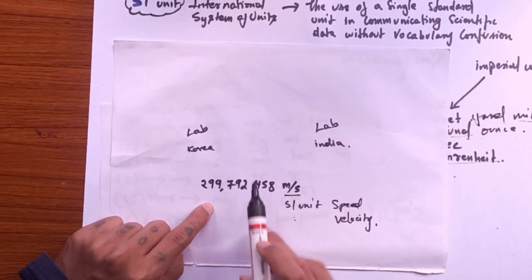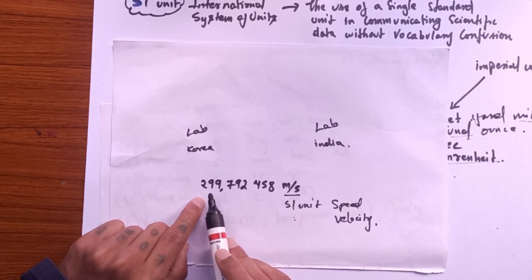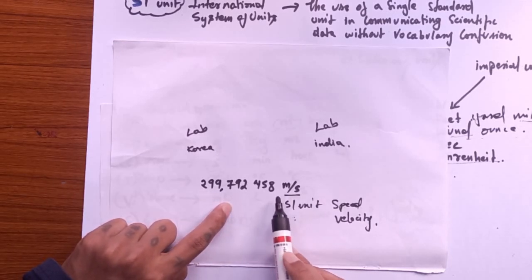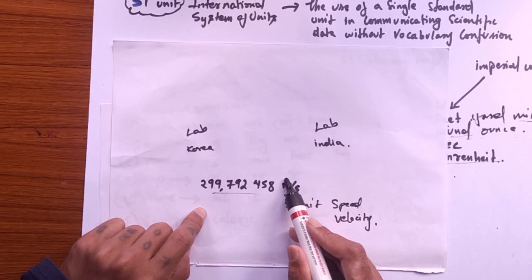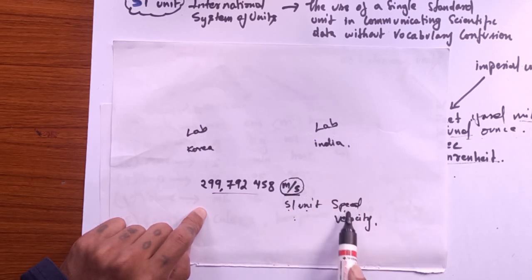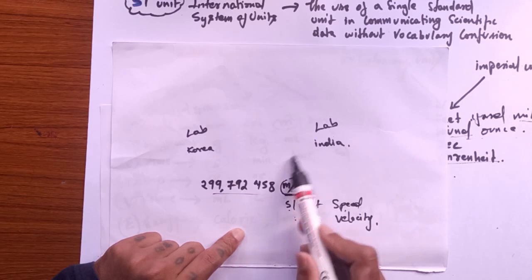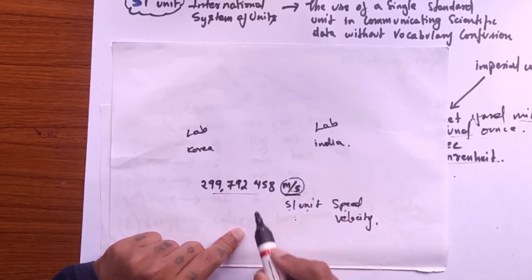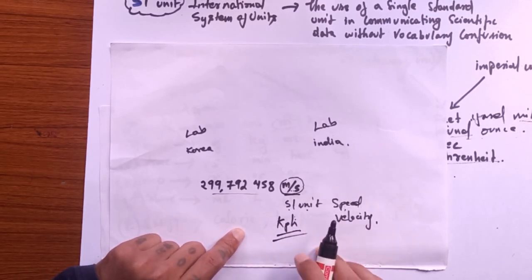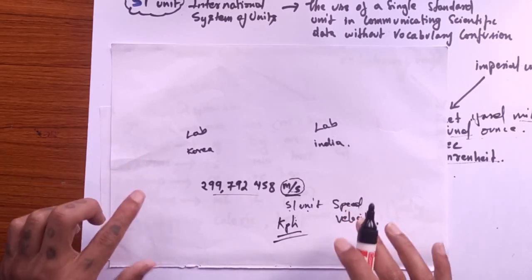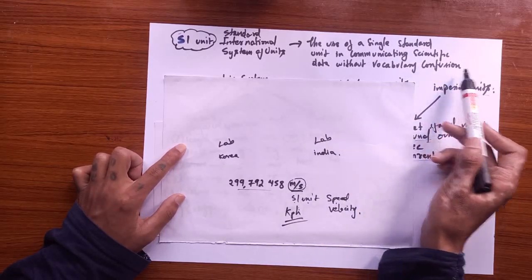Let's say the speed of light is about 299,792,458 meters per second. When they send this particular data, you see they are going to send in terms of meter per second, which is the SI unit of velocity or speed. They are going to send this particular data in terms of SI unit to the Indian scientists. Just know that they are not going to send the speed of light in terms of kilometer per hour or any other units which is not the SI unit. This is important and crucial for the scientific community so that there is not any vocabulary confusion within the scientists.